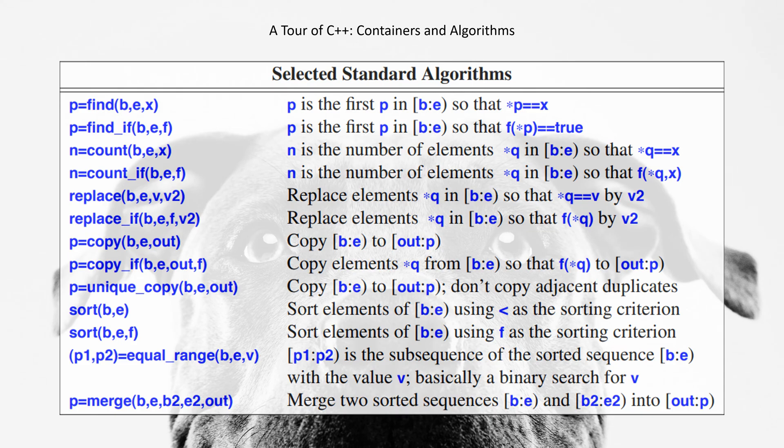replace_if(b,e,f,v2) - Replace elements *q in [b,e) so that f(*q) is true with v2. p=copy(b,e,out).